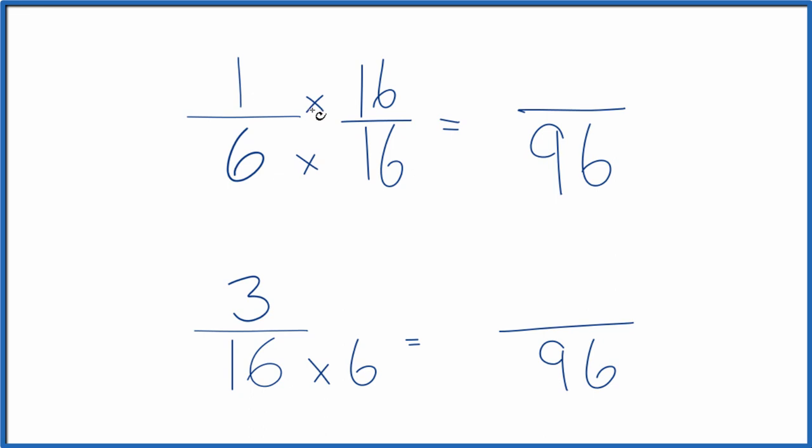1 times 16 is 16, and 16 divided by 96... 1 divided by 6, you get the same answer. These are equivalent fractions. Down here, let's multiply 3 times 6, so we're just multiplying by 1. 3 times 6 is 18. Now I have the same denominator.